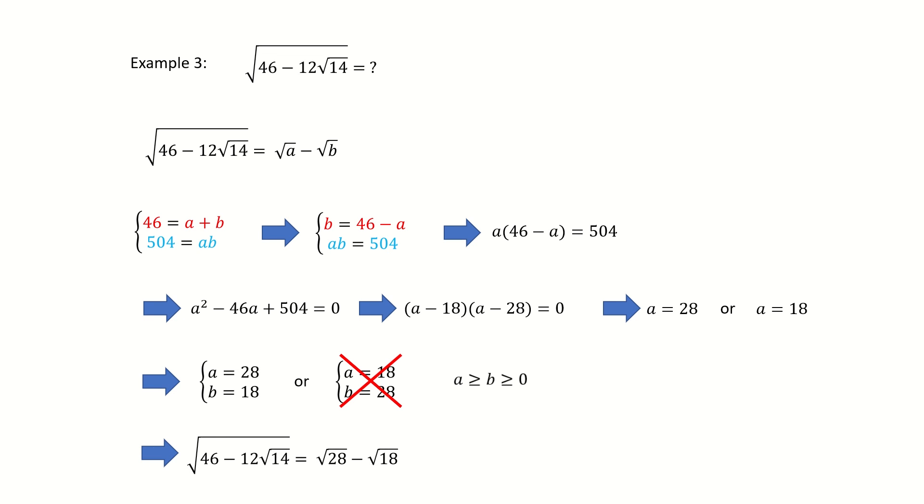But be careful, we can further simplify it. So we got 2 square root 7 minus 3 square root 2. So here is our final answer.